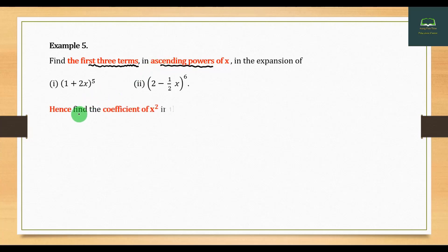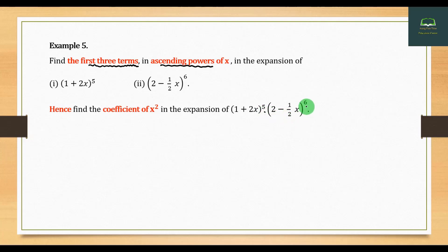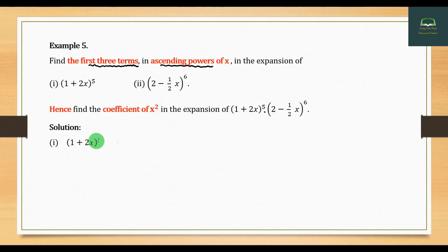The first thing is to find the coefficient of x squared in the expansion of (1 plus 2x) to the power 5 into (1 plus 2x) to the power 6, minus (1 plus 2x) to the power 6. The expansion of x squared has a coefficient of x squared of the square and the second layer. The first expression is the number of the square.